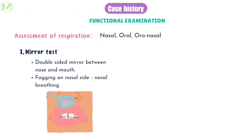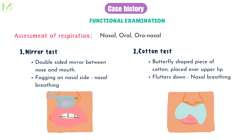In the mirror test, a double-sided mirror is held between the nose and mouth of the patient. If fogging occurs on the nasal side of the mirror, it indicates nasal breathing. If fogging occurs towards the oral side, it indicates oral breathing. In the cotton test, a butterfly-shaped piece of cotton is placed over the upper lip below the nostrils. If the cotton flutters, it indicates nasal breathing; if not, it represents oral breathing.